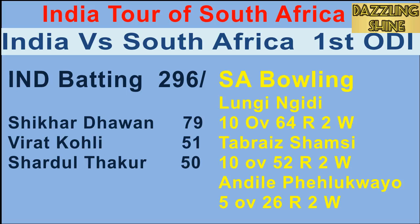Fourth ball of the 28th over, Maharaj to Kohli — full on the pads and Kohli flicks it towards backward square leg for one run, and that brings up his 50. Another fifty from Kohli!